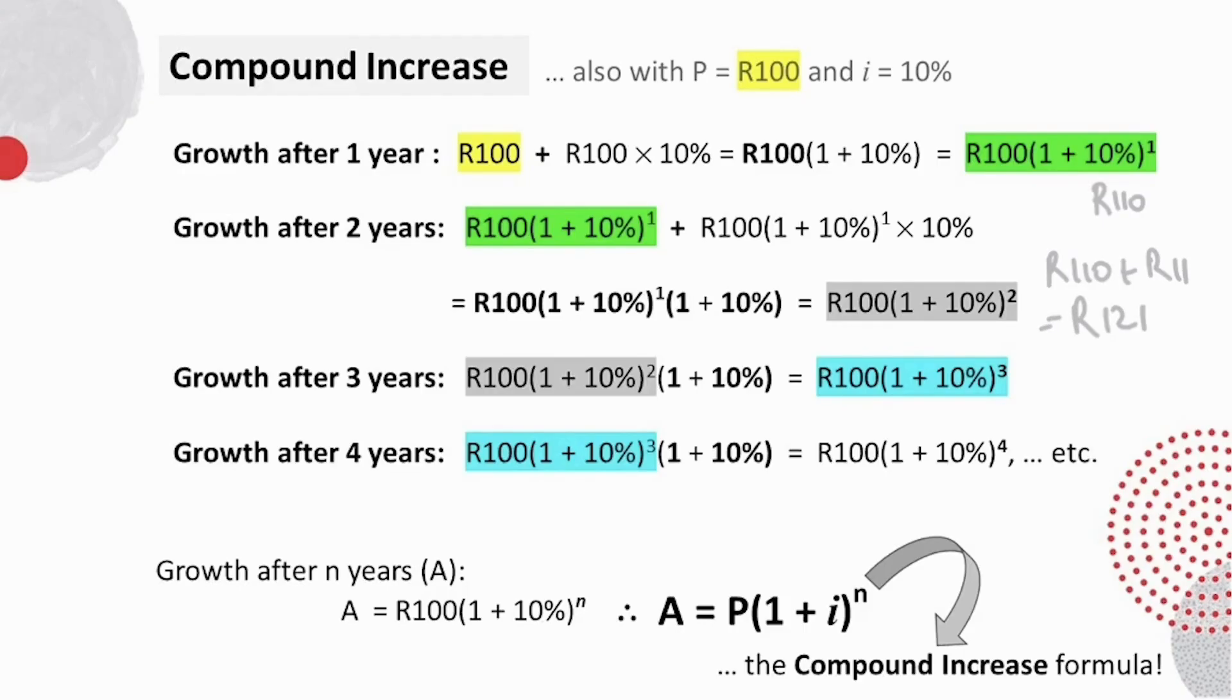And so on. And if we expand this scenario for n time periods, we see that the exponent correlates to the number of time periods. Bringing in our unknowns, P, I, and N, the equation looks like this, our compound increase formula.